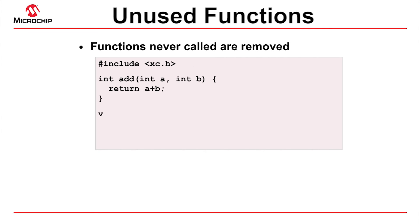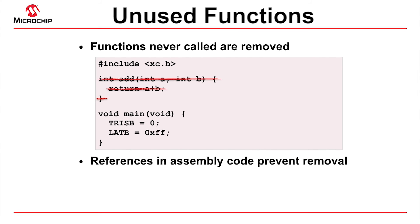The MPLAB XC8 compiler can determine the program's call graph. Functions not in this graph are removed by the compiler, as if they'd never been defined. MPLAB X IDE will produce a warning to say that breakpoints cannot be set on any statement in a removed function. If you plan to call a C function only from assembly code, note that this optimization is automatically disabled as soon as you reference the function's symbol in assembly code. Using the symbol's name in a global directive is sufficient. Note that functions cannot be specified as volatile.